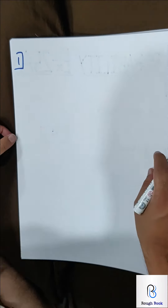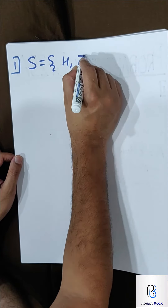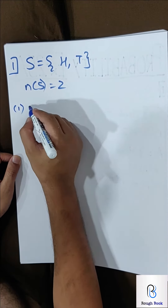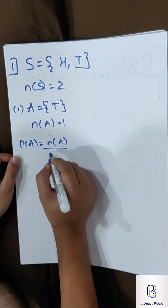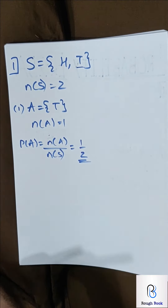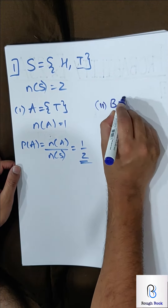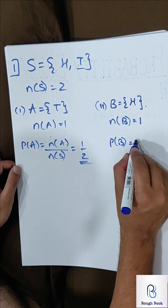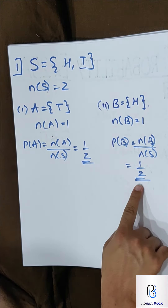I want everyone to try sum number 1 on their own — very simple, based on the coin technique. A coin is tossed once. What is your sample space? Head or tail — you are allowed to write H and T. Number of S is 2. The first event: getting a tail. Possibility of getting a tail — only one tail — so number of A becomes 1. Probability of A = number of A upon number of S = 1 by 2. Now the second possibility: not getting a tail means you want head. Number of B becomes 1 again. Probability of B = 1 by 2, because number of B is 1 and total possible outcomes are 2. Isn't it very simple?